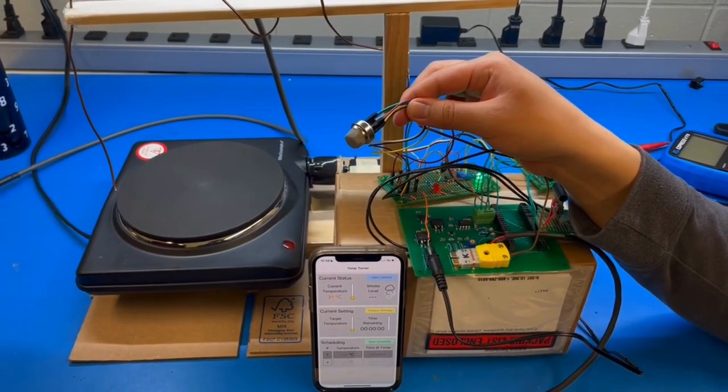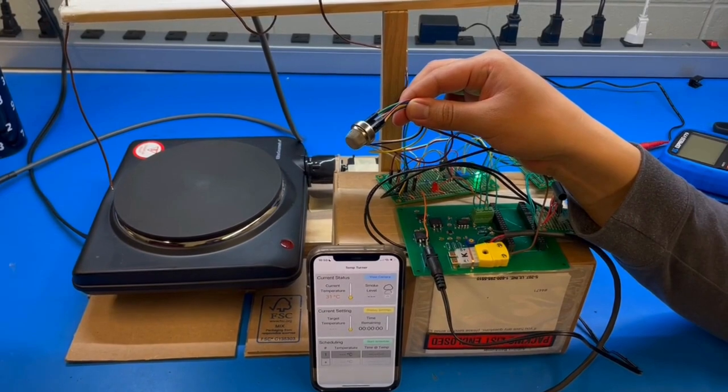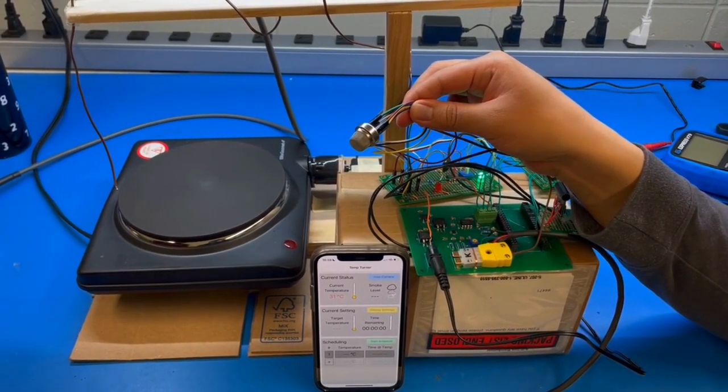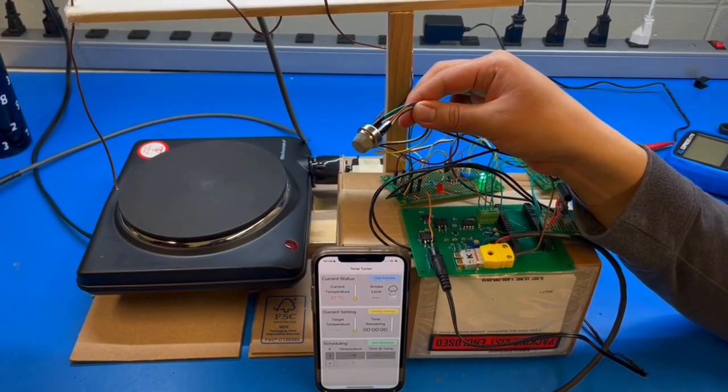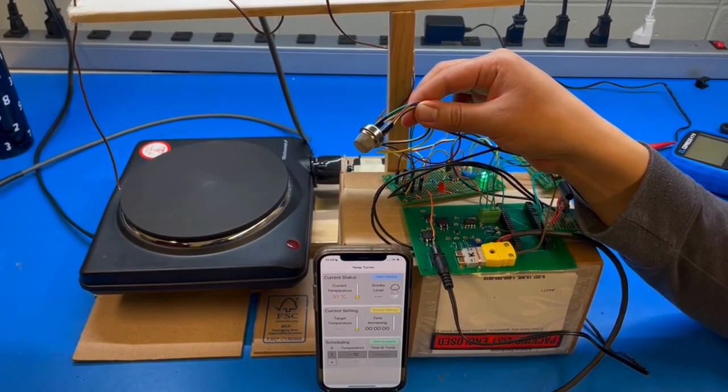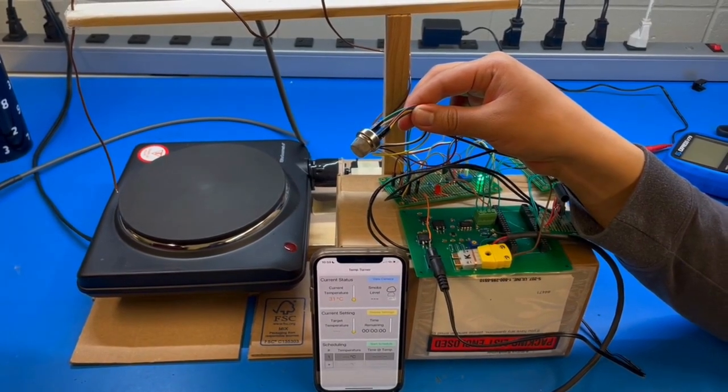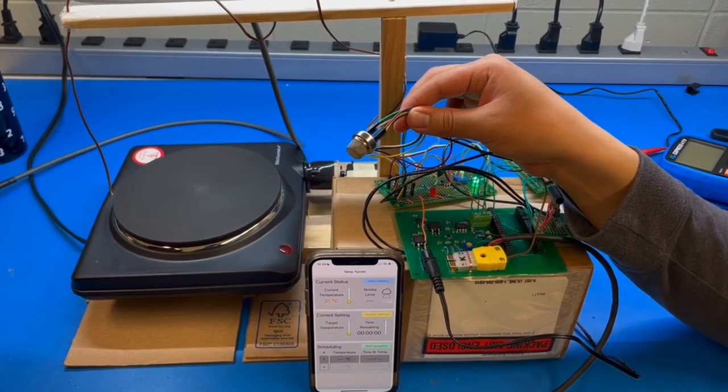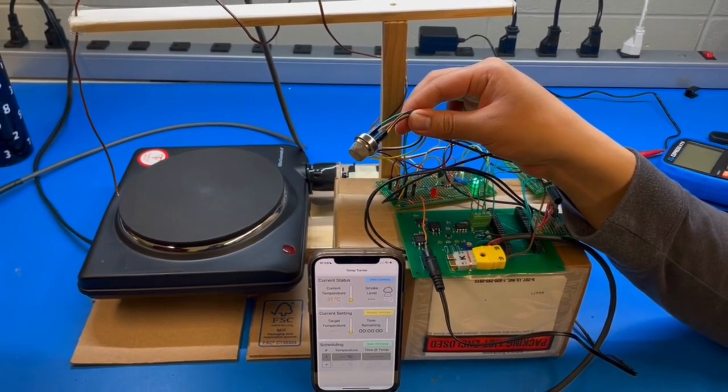One functionality of the temp turner which we couldn't display while we were boiling water is the ability of the smoke sensor to also detect gases, including butane, propane, methane, alcohol, and hydrogen. These gases can have concentrations ranging from 200 to 10,000 ppm.